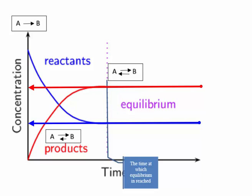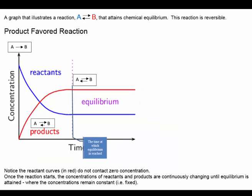In this case, they are not equal — and in fact, in most cases, they are not equal. In this reaction, when equilibrium is attained, the concentration of the products is greater than that of the reactants. This is the so-called product-favored reaction.